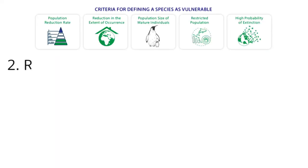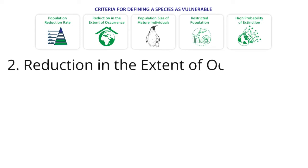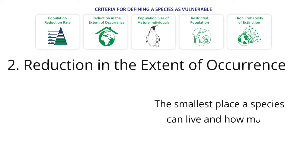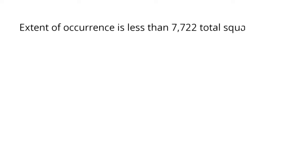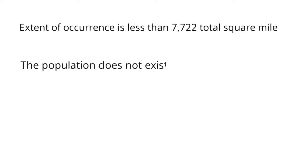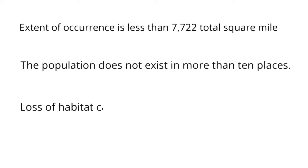2. Reduction in the Extent of Occurrence. In biology, a species' extent of occurrence means the smallest place where a species can live and how many live there. These places are defined on a map. A species is vulnerable when its extent of occurrence is less than 7,722 total square miles. Additionally, a species is vulnerable if the population does not exist in more than 10 places. Loss of habitat causes a smaller extent of occurrence.